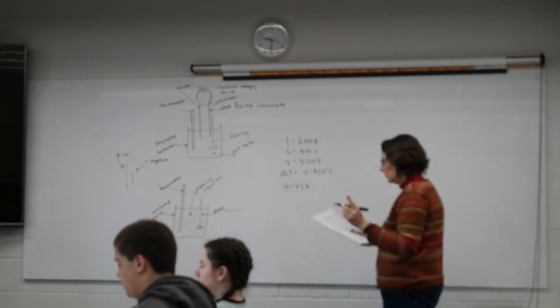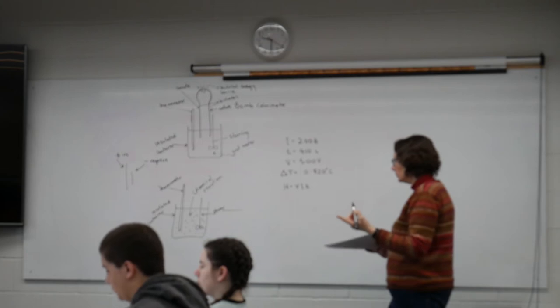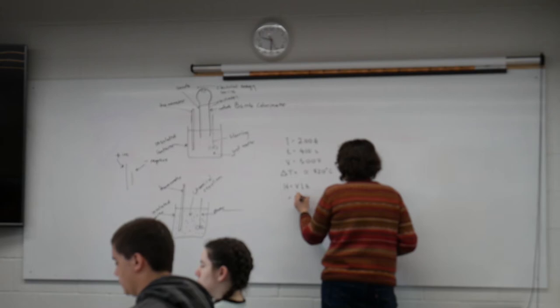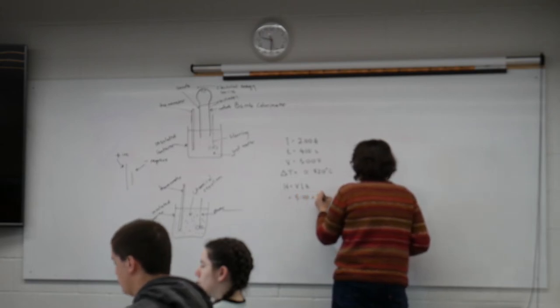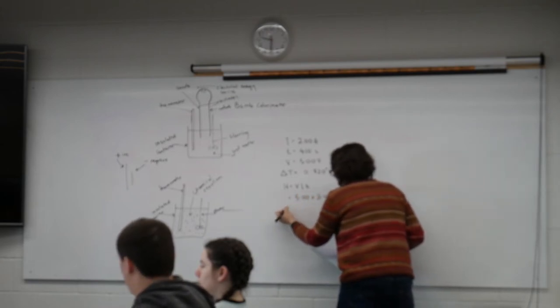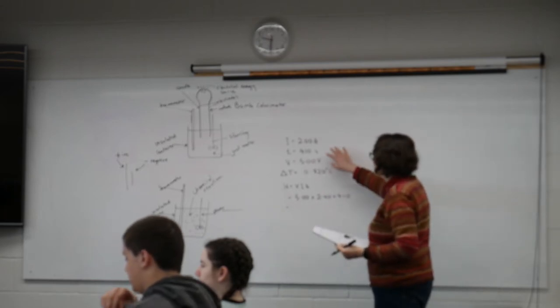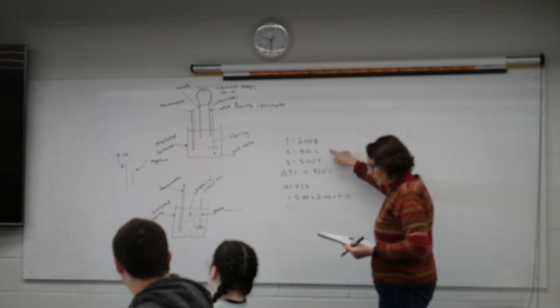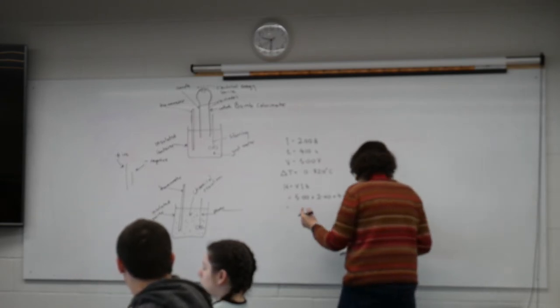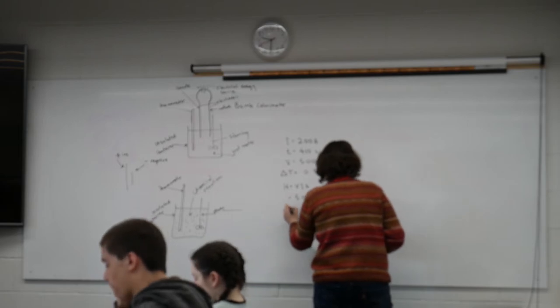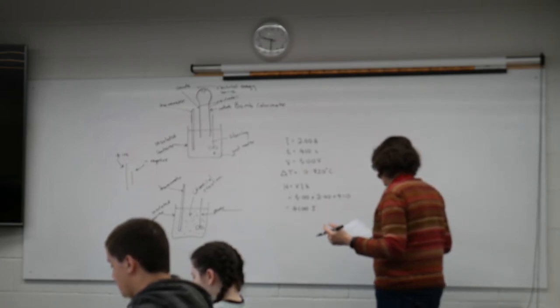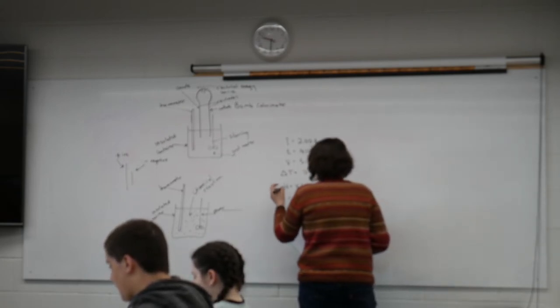But we can also combine the two calculations together. Let's do it separately like it's done in the book. So we'll say, that's our energy there. It's really our change in enthalpy. That's 4.10 kilojoules.